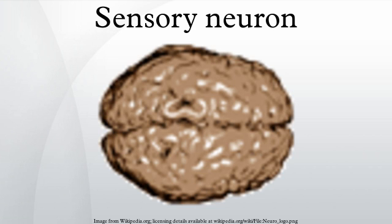Depending on the movement, the hair cell can either hyperpolarize or depolarize. When the movement is towards the tallest stereocilia, the K+ cation channels open, allowing K+ to flow into the cell, and the resulting depolarization causes the Ca2+ channels to open, thus releasing neurotransmitter into the afferent auditory nerve. There are two types of hair cells: inner and outer. The inner hair cells are the sensory receptors, while the outer hair cells receive efferent input originating from cells in the superior olivary complex.